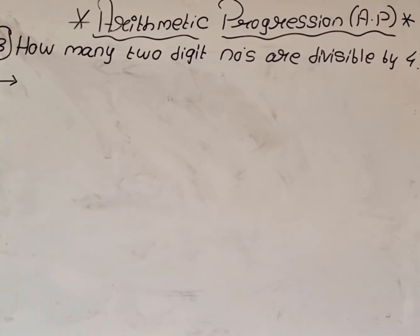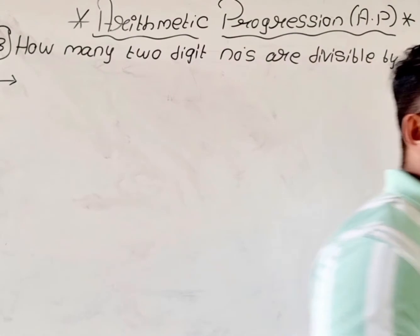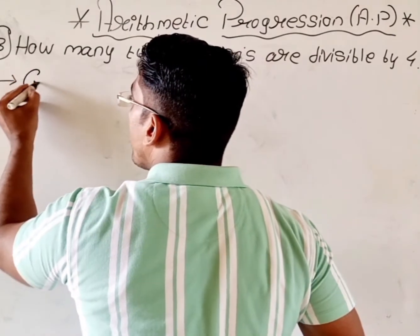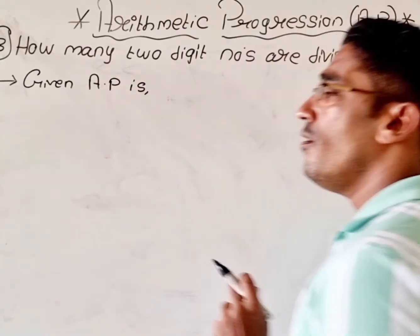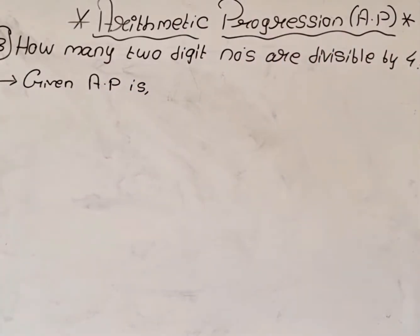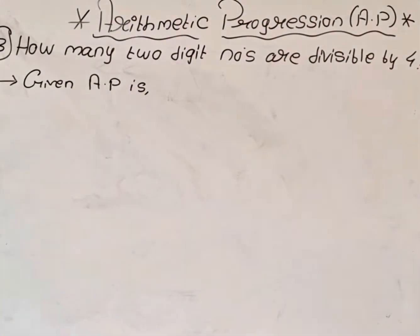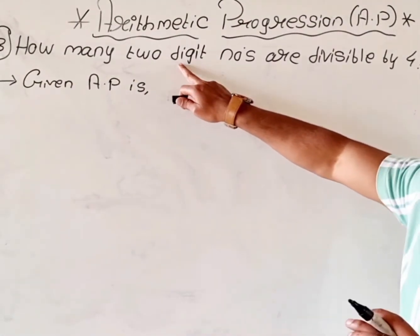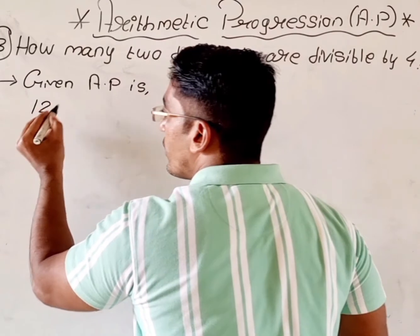Now let us see the third example. The question is: how many two-digit numbers are divisible by 4? In this sum the AP is not given to us, so first let us form the AP. Which is the first two-digit number divisible by 4? It is 12. Although 8 is also divisible by 4, 8 is a single-digit number and we want two-digit numbers. So the first two-digit number divisible by 4 is 12.